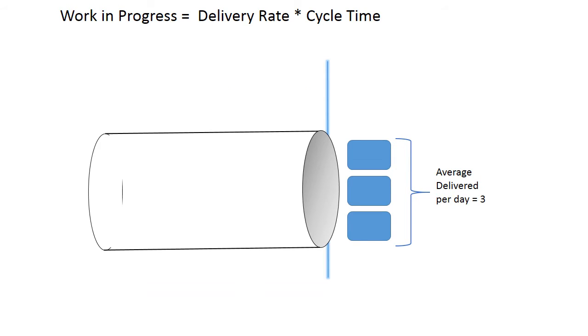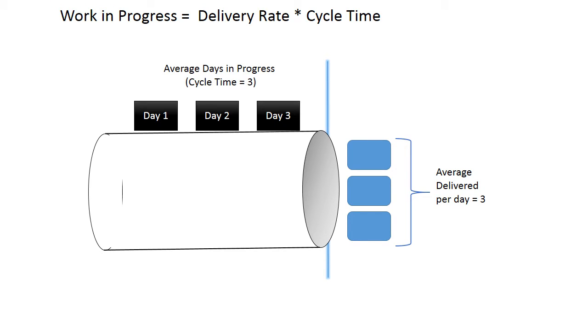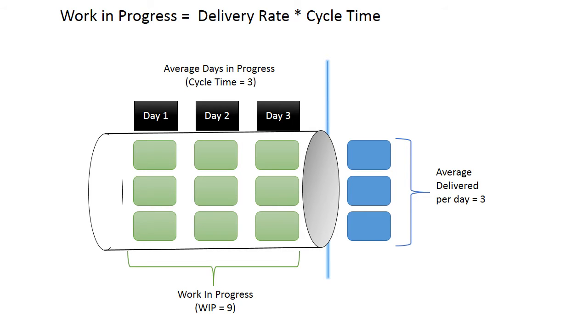Let's try an example. If three work items are delivered per day, and each work item takes three days to complete, then we'll have nine work items in progress.